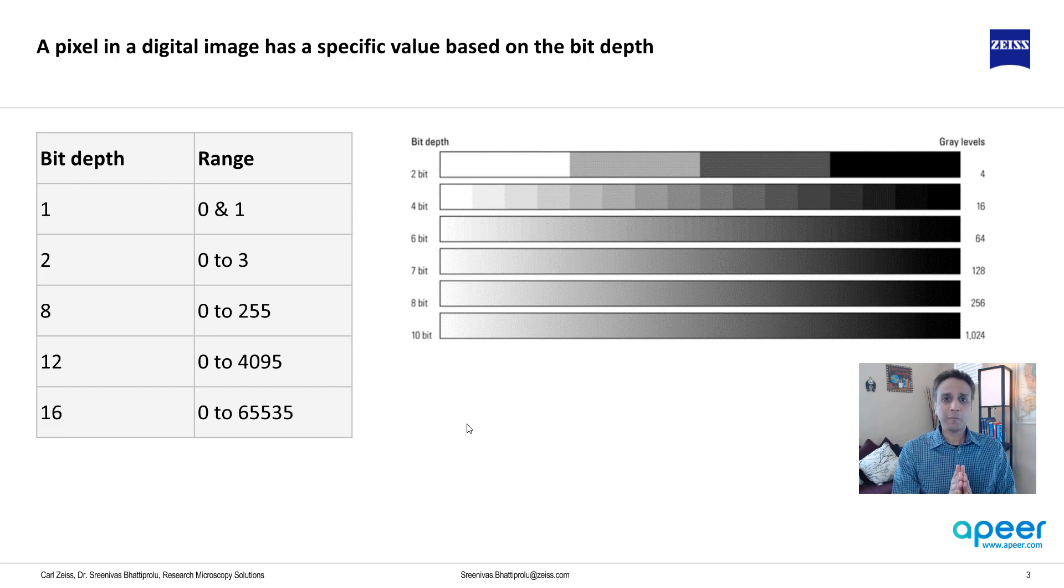So in summary, a pixel can have values ranging from 0 to 255 or 0 to 65,535, or these numbers can also be 0.123 or 0.5. So it can also be floating point numbers. It can be values between 0 and 1. So then that's a different type of image.